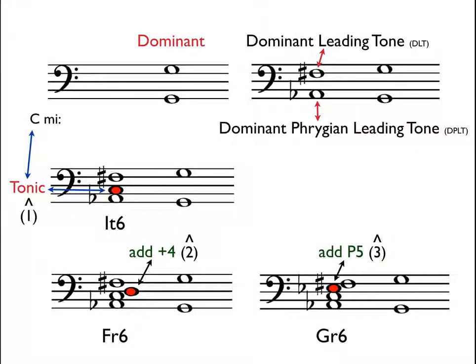Again, to create the augmented sixth chord: find the dominant and write it in an octave. Then add the dominant leading tone — a half step below — and the dominant Phrygian leading tone — a half step above — and this creates the augmented sixth. Add the tonic, a major third above the dominant Phrygian leading tone. And finally, add the fourth note as necessary: for the French six, add an augmented fourth above the bass note; for the German six, add a perfect fifth above the bass note.